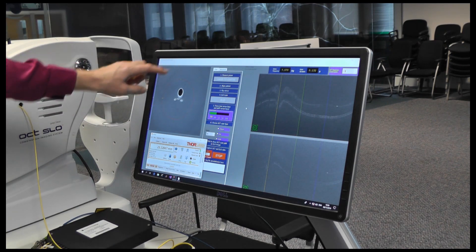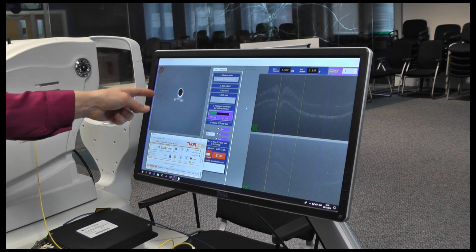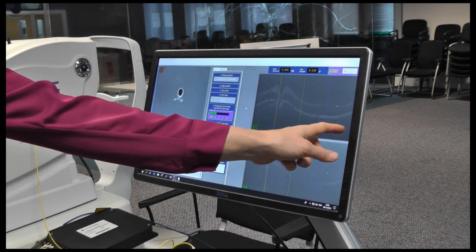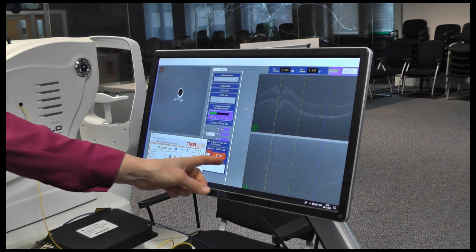That enables us to see the optic nerve and the blood supply, and then we can select an area, either a line or a circle, to take an OCT depth profile.